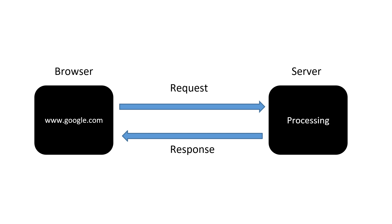Whenever you go to any browser and type the name of a website, for example google.com, and press Enter, it will generate a request that goes to the specific Google server. The server processes the request and in response you get the page of google.com — including the HTML file, CSS files, API requests, scripting, and other things.